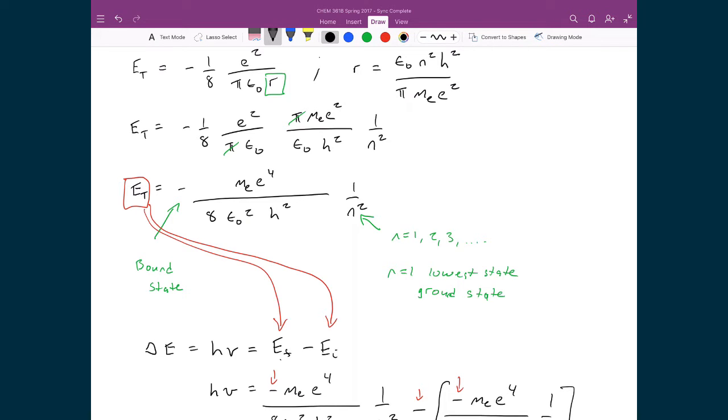And again, this was a term that describes the energy of the electron within the nth orbit, where n is 1, 2, 3, it's any integer number.